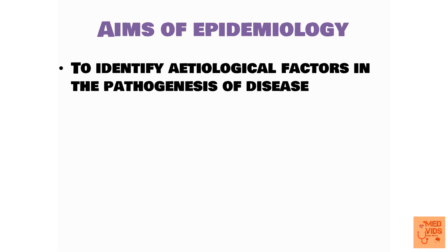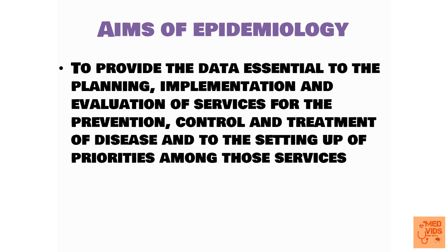The second aim is to identify etiological factors in the pathogenesis of disease. By identifying the etiological factors, we can reduce them in that community and control the disease caused by those factors. The third aim is to provide data — we provide data which is essential to the planning, implementation, and evaluation of health services for the prevention, control, and treatment of disease, and to the setting up of priorities among those services.